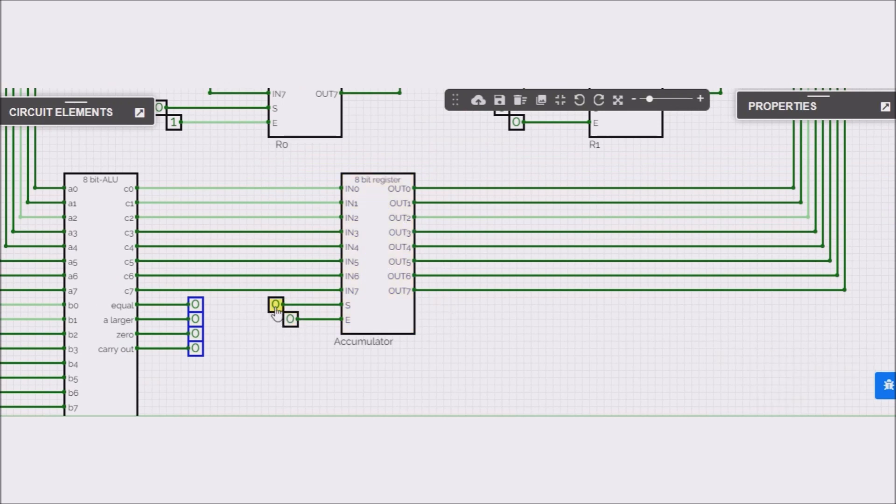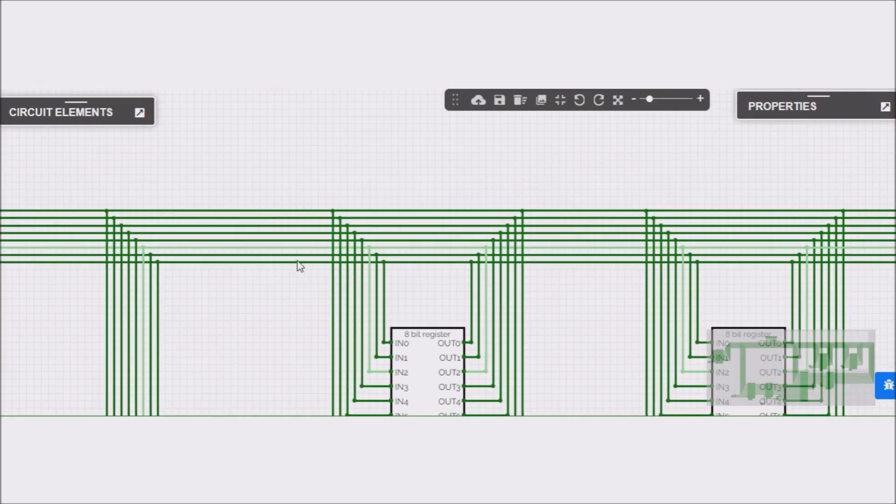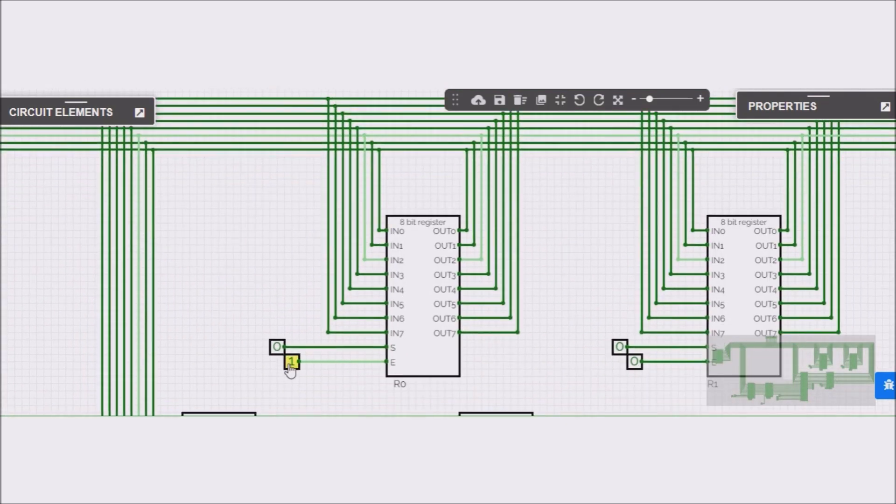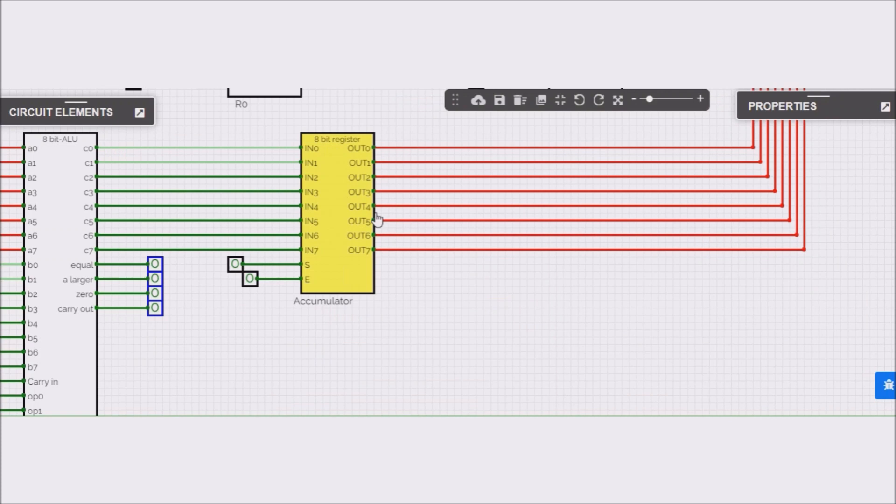So, we click set, and now it is inside the accumulator register. Now we can free the bus, and now with our result inside the accumulator.